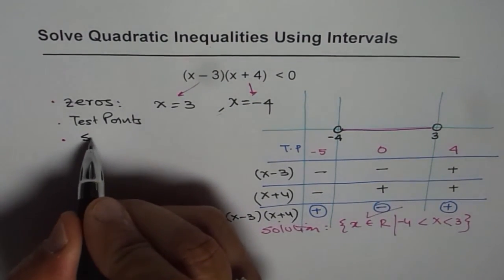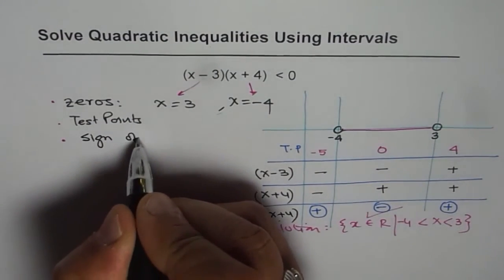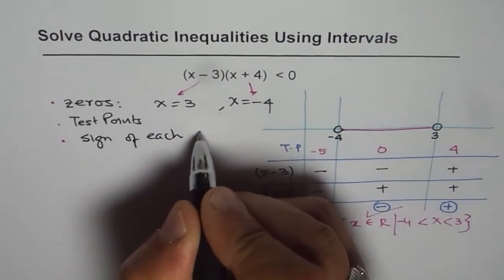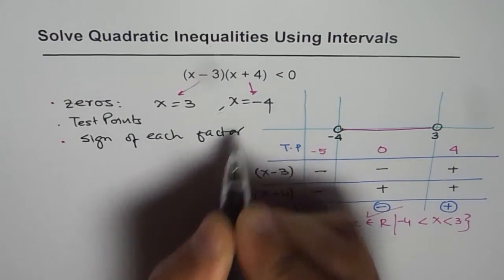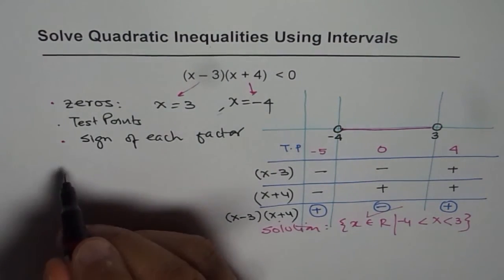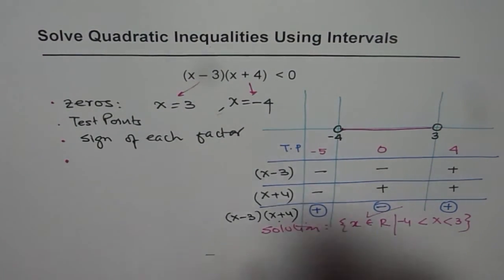Sign. Then you check sign of each factor. And then multiply these factors to see whether the inequality is satisfied or not. And then product of signs.